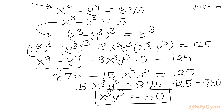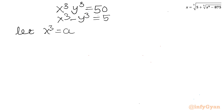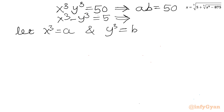Now let me write these two equations clearly. Let x cubed equal a and y cubed equal b. Then our first equation is a times b equals 50, and our second equation is a minus b equals 5. Now we have to solve this system, which is comparatively easy.